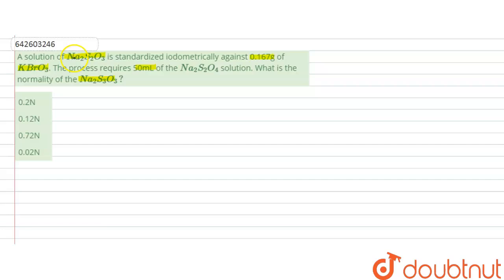In this question, it is given that a solution of sodium thiosulfate is standardized against 0.167 gram of KBrO3, and it requires 50 ml of Na2S2O3 solution. So we have to calculate the normality of the sodium thiosulfate solution and the given options are. So first of all,